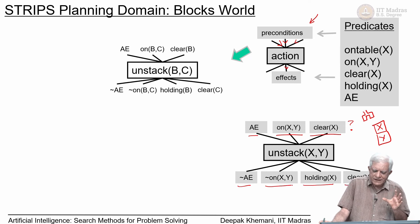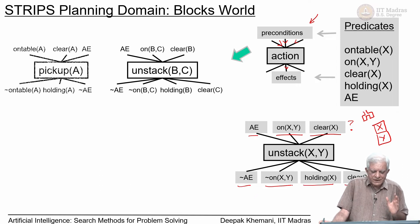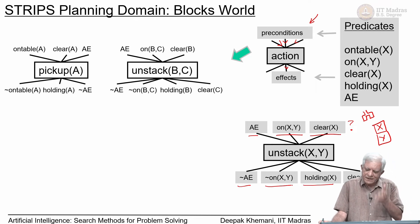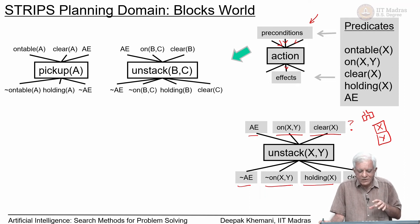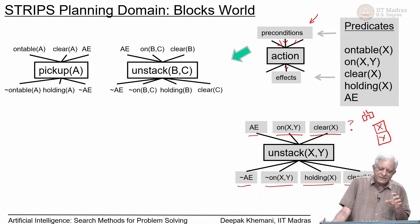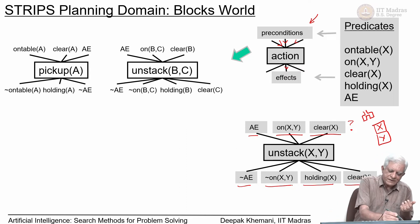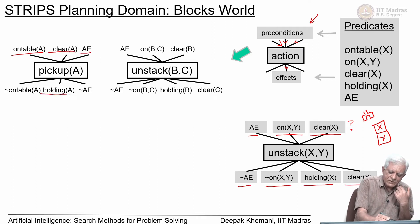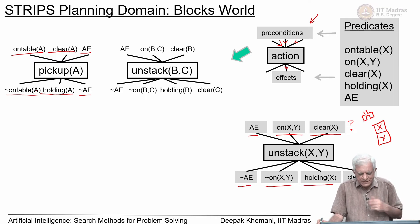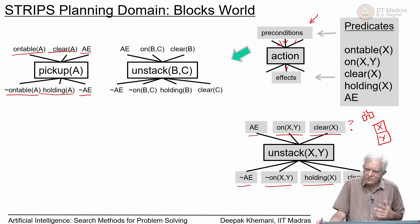The original STRIPS domain had four actions: unstack, which we have just seen; and pick-up, which applies when the block is on the table. These two differ in that unstack applies when a block is on another block, while pick-up applies when the block is on the table. The preconditions for pick-up(A) are: A is on the table, nothing is on top of A, and the arm is empty. The effects are: holding(A) becomes true, arm-empty becomes false, and A is no longer on the table. Pick-up takes only one argument, whereas unstack takes two.